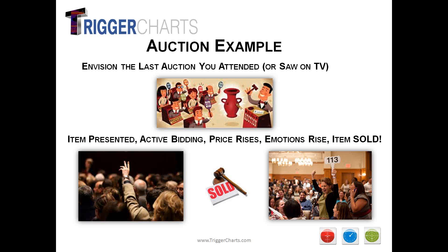For example, moving averages work very well in trend environments when the market's trading up and pulling back. They completely fail — meaning price will chop through them — in a range environment. The same is true for general oscillators: Stochastic, RSI, MACD, and so forth. They will work very well in range environments but will fail in trending environments. So the foundation of trading needs to be a focus on supply-demand and shifting environments.